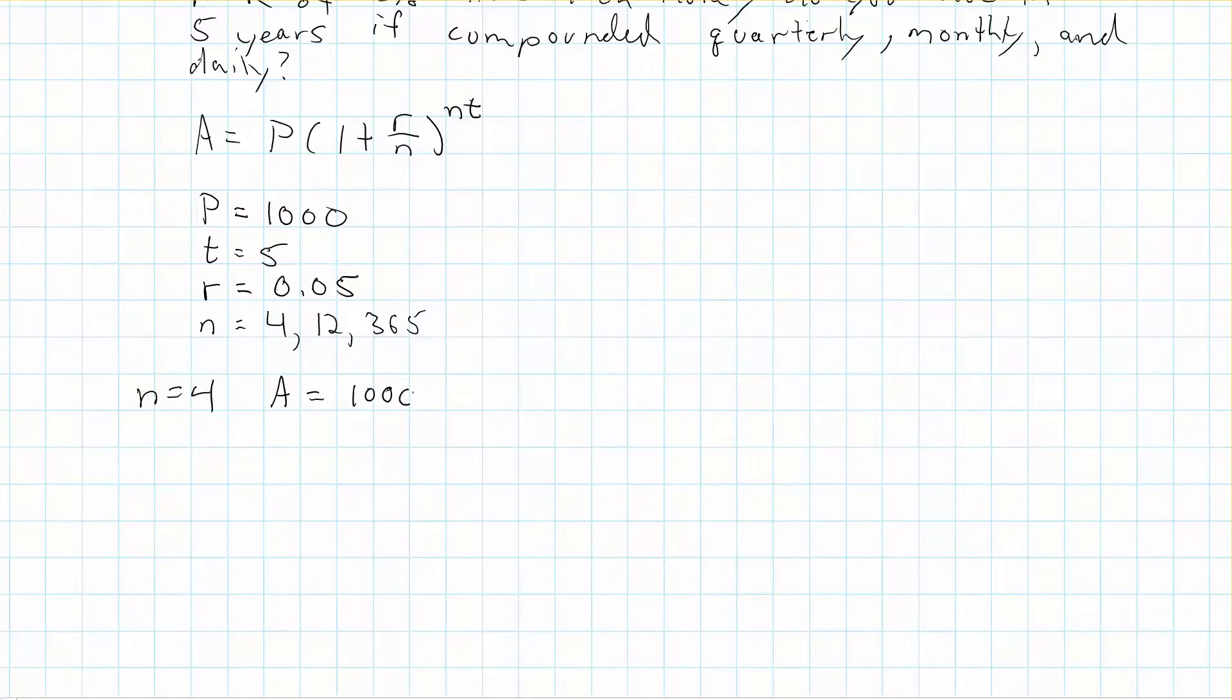So, now we just kind of do a formula plug and chug. So, let's do first, n equals 4. And so, the amount would be 1,000 times 1 plus 0.05 over 4 to the 4 times 5. So, this would be 1,000 times 1.0125 to the 20th power. So, calculating that out, we would get approximately $1,282.04. So, we can see if you had $1,000 at 5%, in 5 years you'll have made $282. And that's just doing nothing, that's just letting it sit in the account and gain interest.